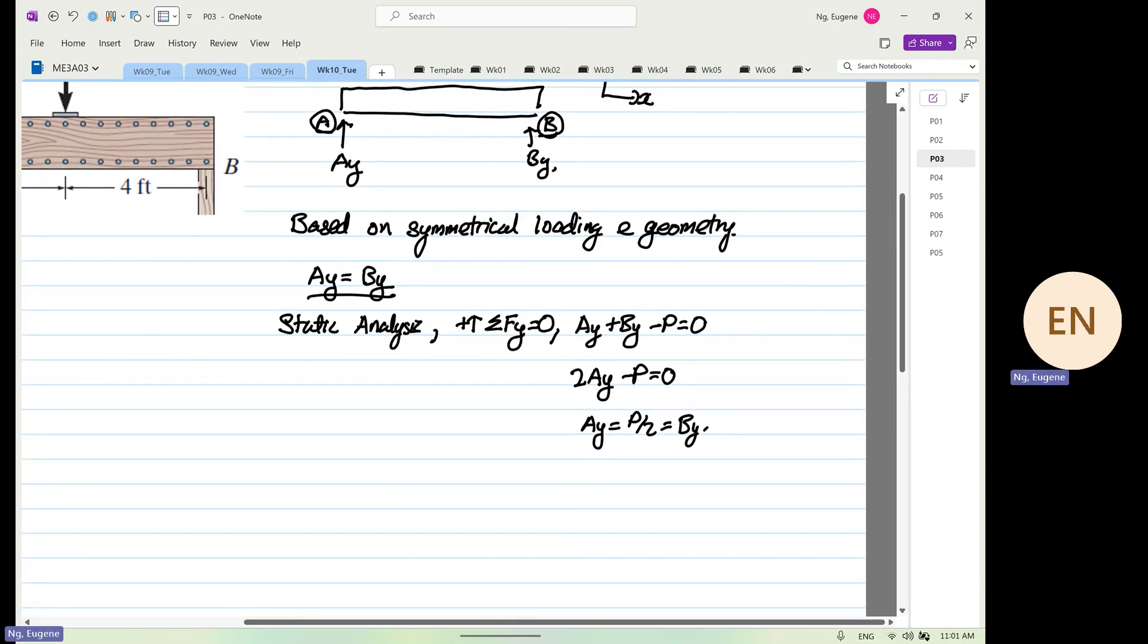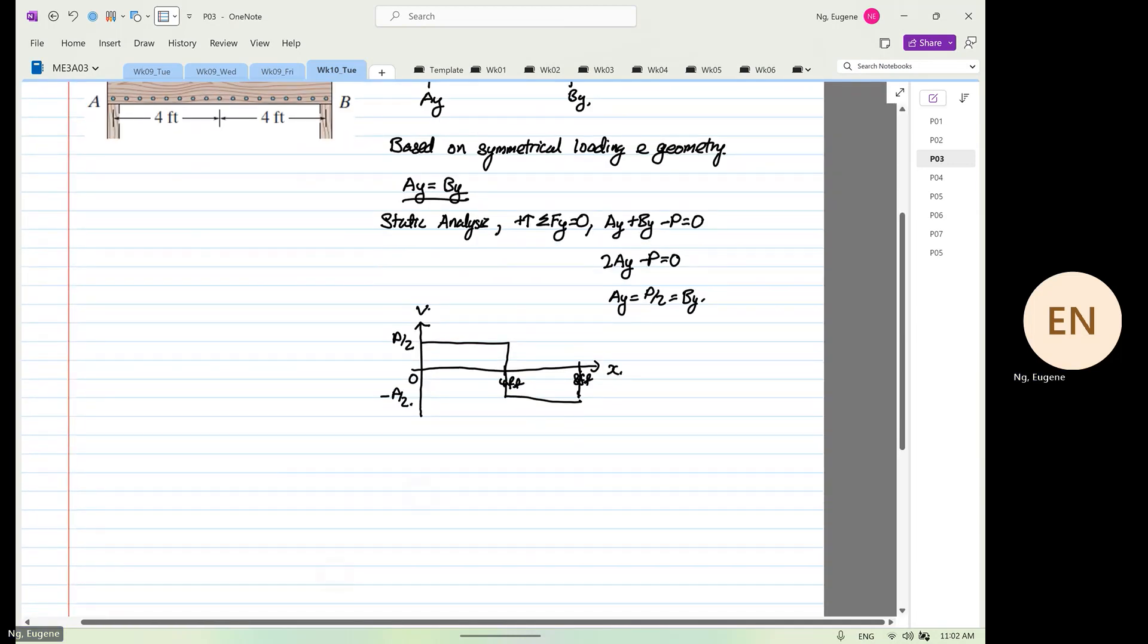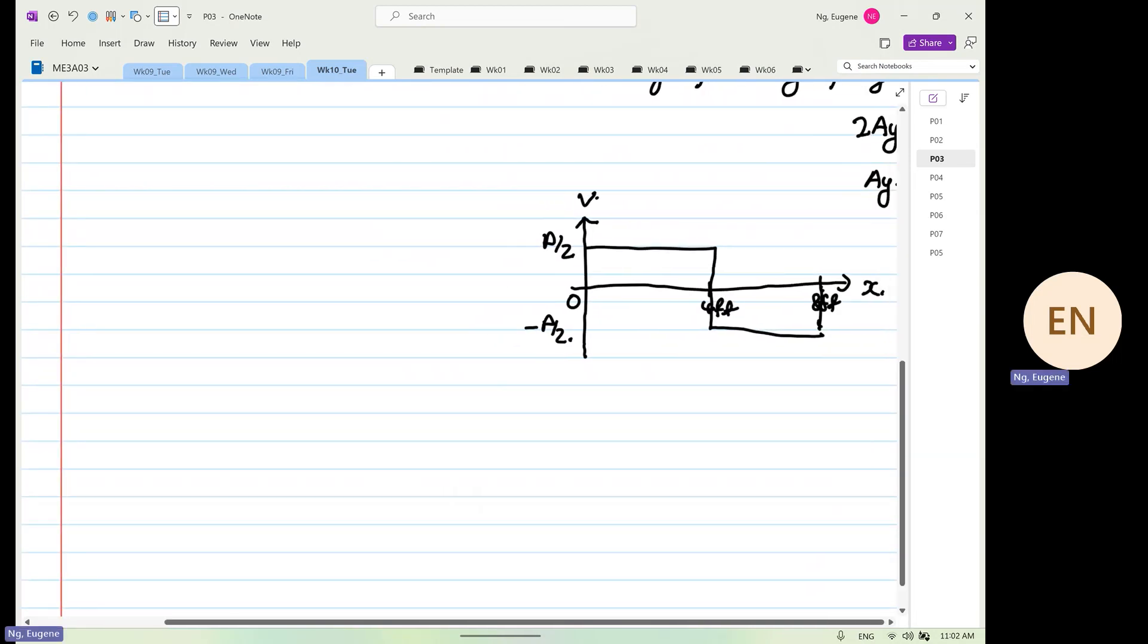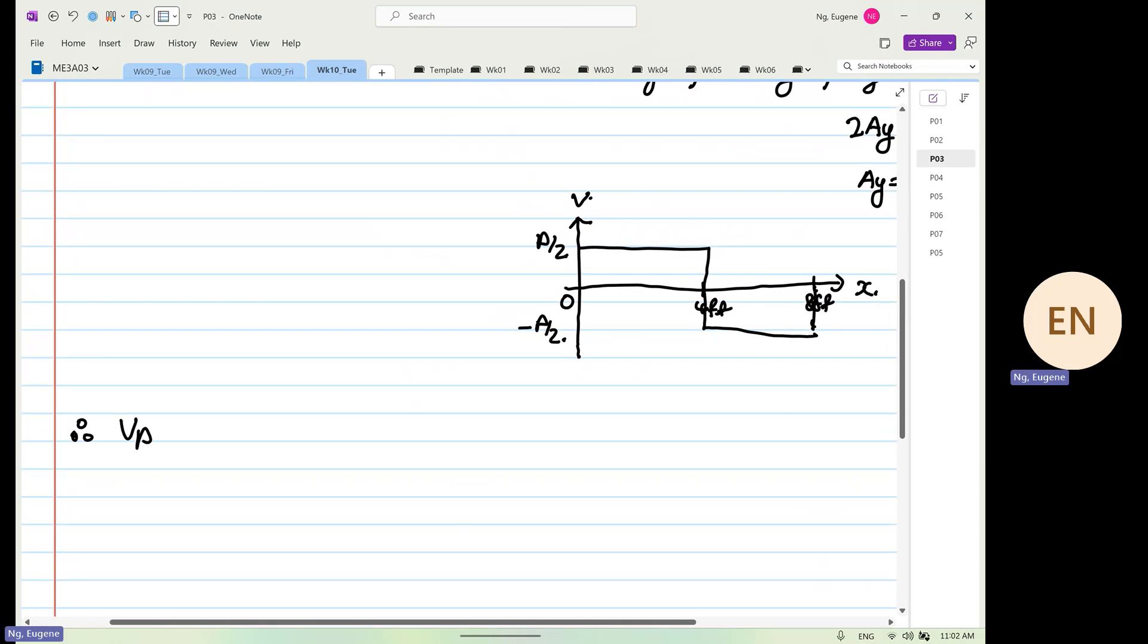So now when we construct our shear force diagram, you know that this is zero, this is four feet, and this is eight feet. And this is our X, and this is our V. So we know that the maximum shear force is P over 2, the minimum is minus P over 2. Therefore, Vy is equal to P over 2.